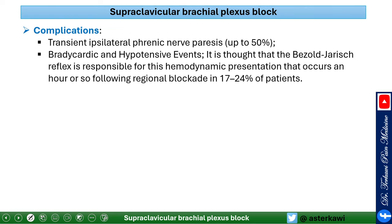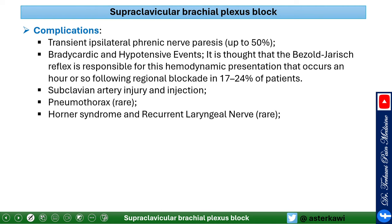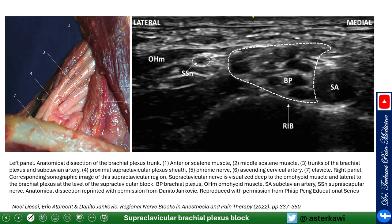It's good practice to always visualize the phrenic nerve. Bradycardia and hypotension can occur — thought to be secondary to the Bezold-Jarisch reflex — in up to 24% of patients. Subclavian artery injury and injection, pneumothorax, and Horner's syndrome are also possible, especially if unnecessarily high volumes are used.